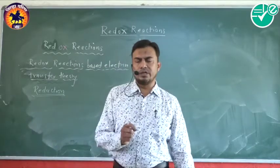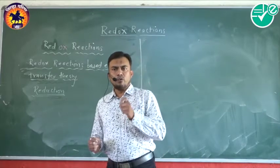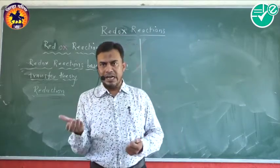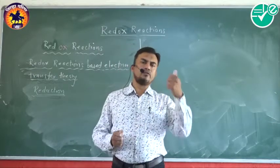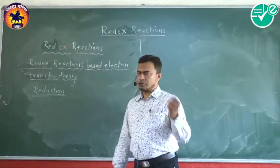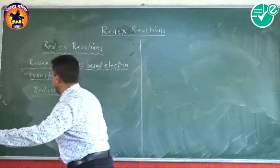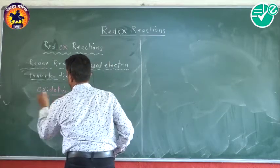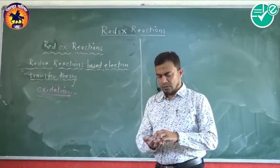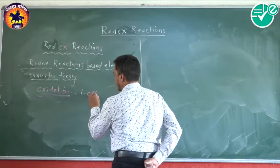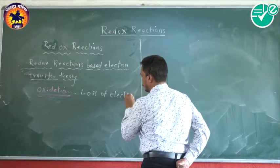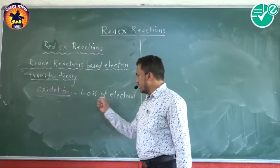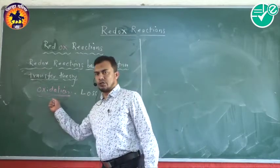Electron transfer theory is nothing but the transfer of electrons from one species to another during a chemical process. The reactants change to products where electrons transfer from one species and get deposited into another species. On the basis of electron transfer theory, oxidation is nothing but the loss of electrons from the species. If any substance or species during the chemical process loses electrons, then the reaction is called an oxidation reaction.